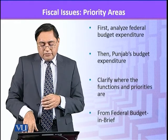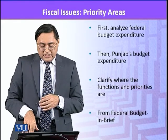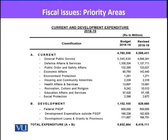We will look at the federal budget expenditure and see where the priorities are, and then we will look at Punjab. These tables are from the Budget in Brief, which is published by the Ministry of Finance. These are from the latest Budget in Brief that was published in June 2019.